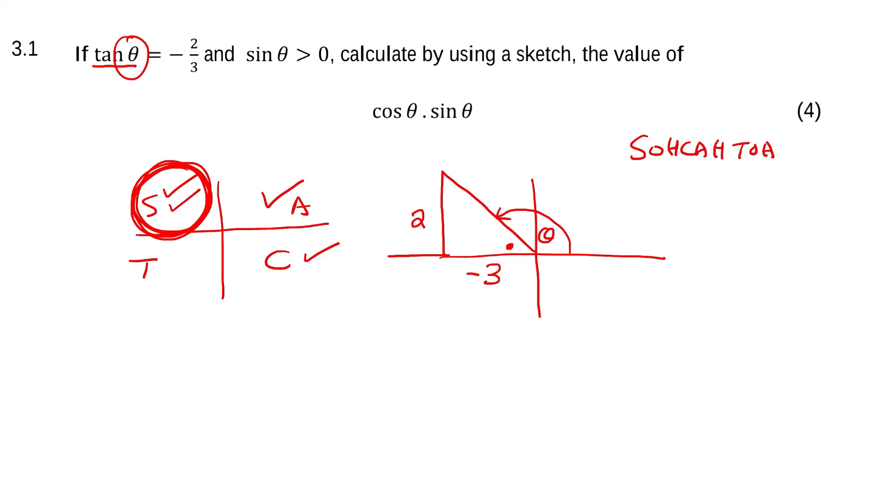Now we use Pythagoras to find this missing side. Let's call it r. r squared equals 3 squared plus 2 squared. You don't need the negative; we're just looking at lengths when calculating the hypotenuse.